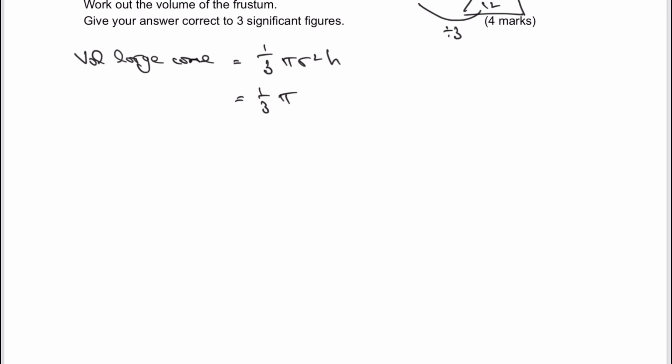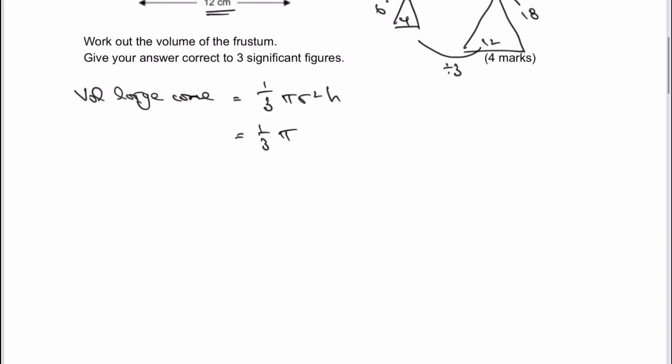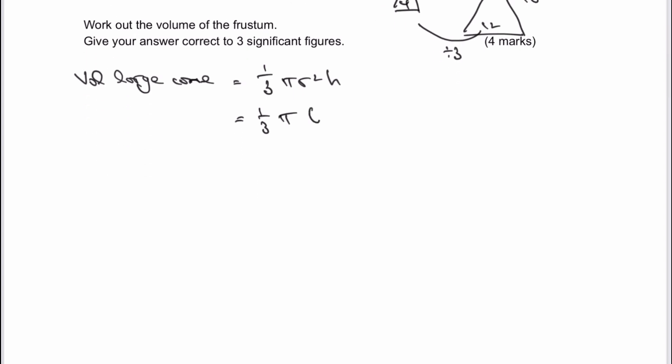The radius of the large cone is half the diameter, so half of 12, which is 6. Don't forget it's 6 squared.